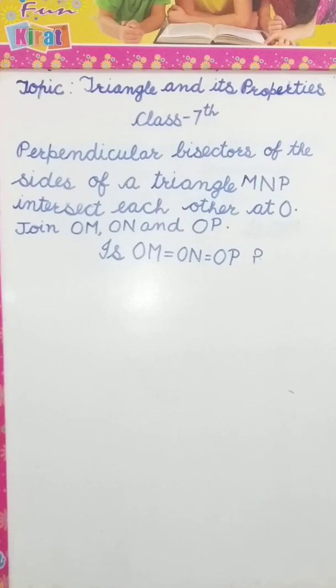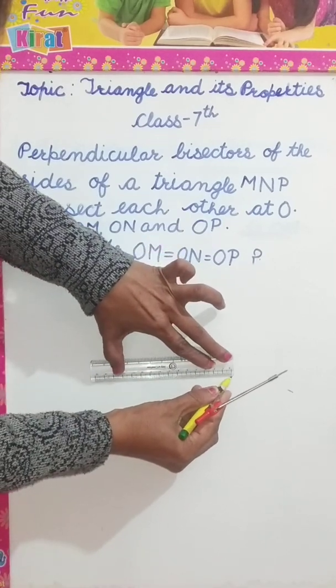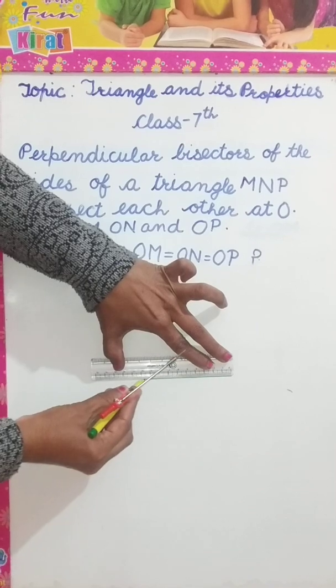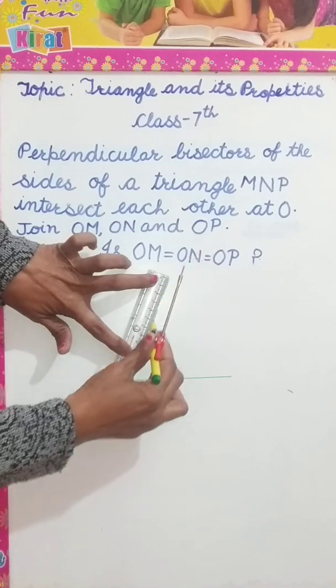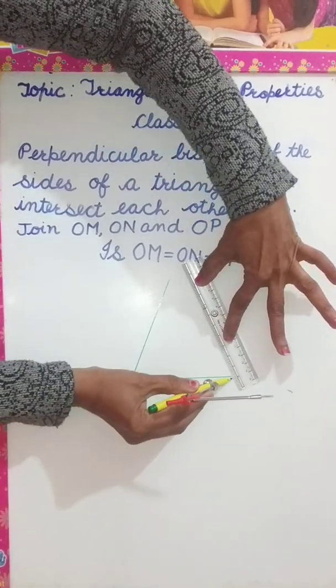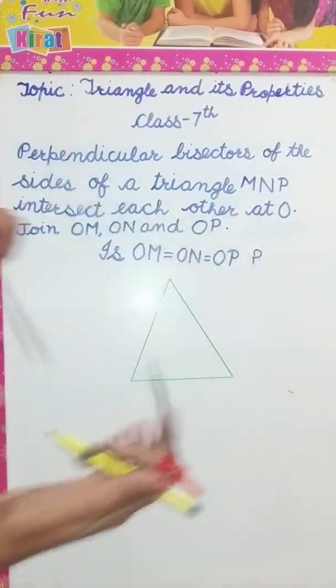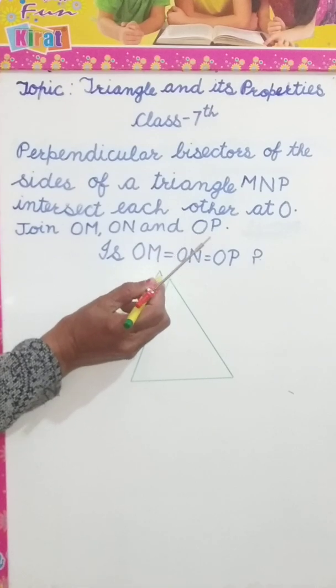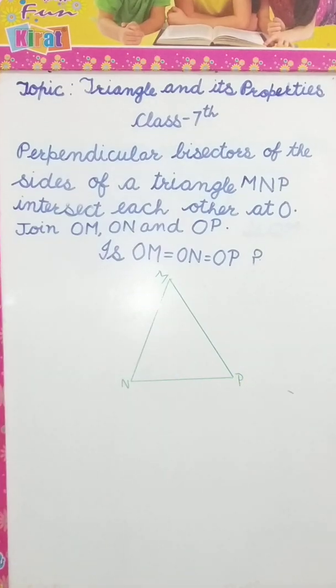Let's move step by step. First of all, we have to draw a triangle MNP. So let's draw a triangle. This is MNP, triangle MNP.